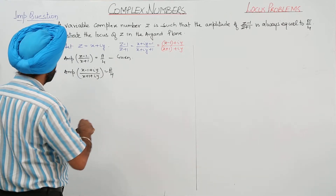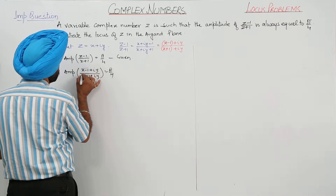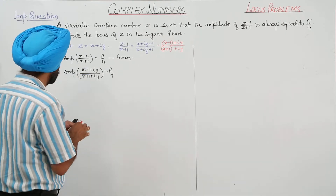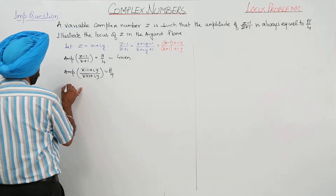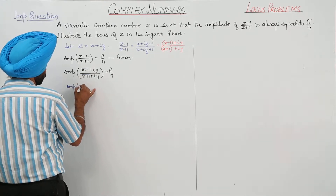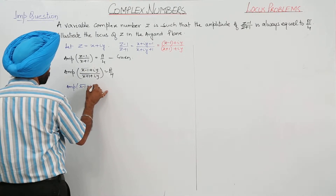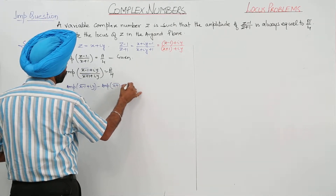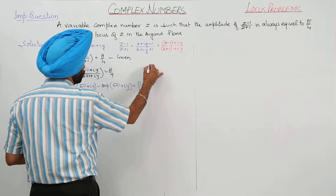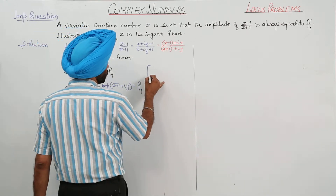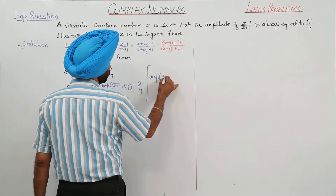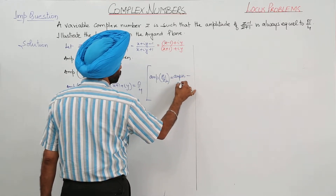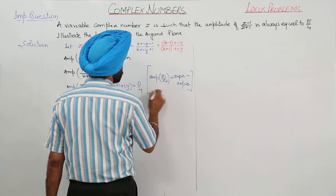We need to treat the real parts together — the blue notation means real part, not conjugate. Remember this. We apply the property: amplitude of z1 upon z2 equals amplitude of z1 minus amplitude of z2. So amplitude of (x minus 1 plus iota y) minus amplitude of (x plus 1 plus iota y) equals π/4.